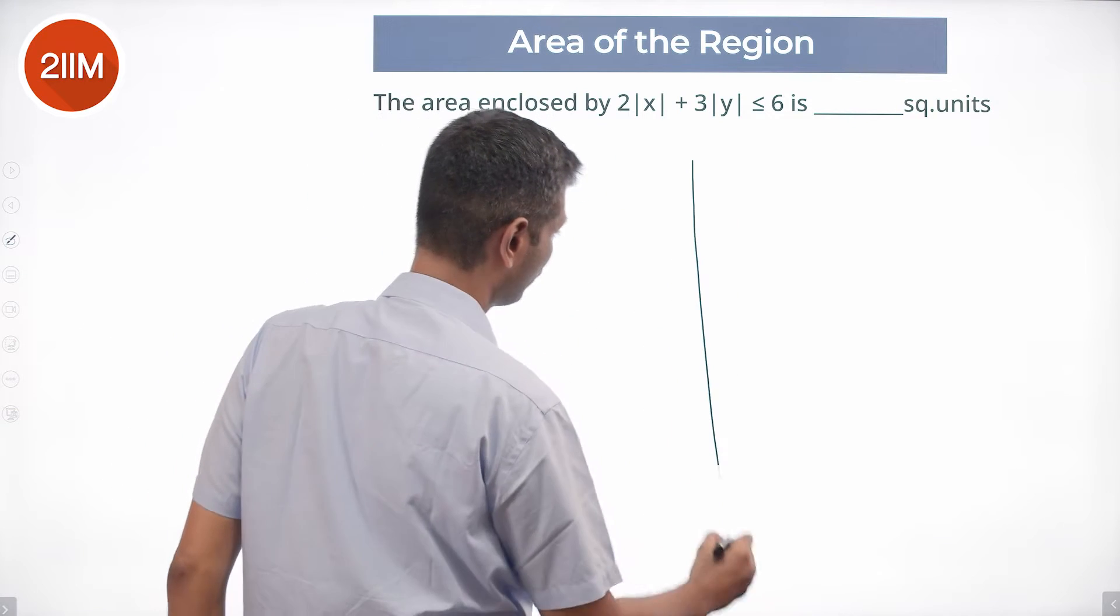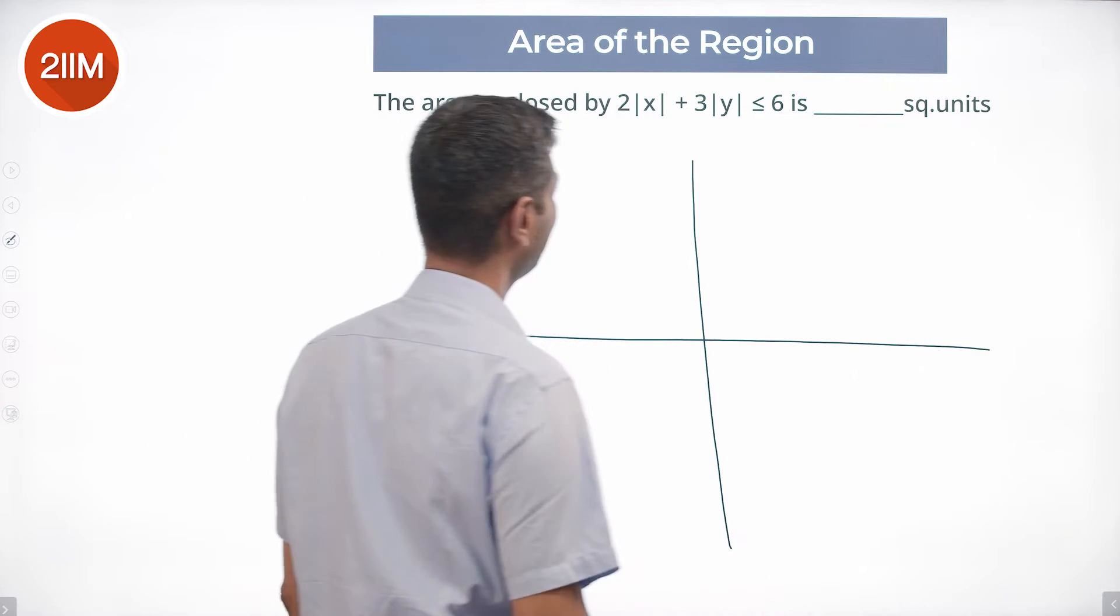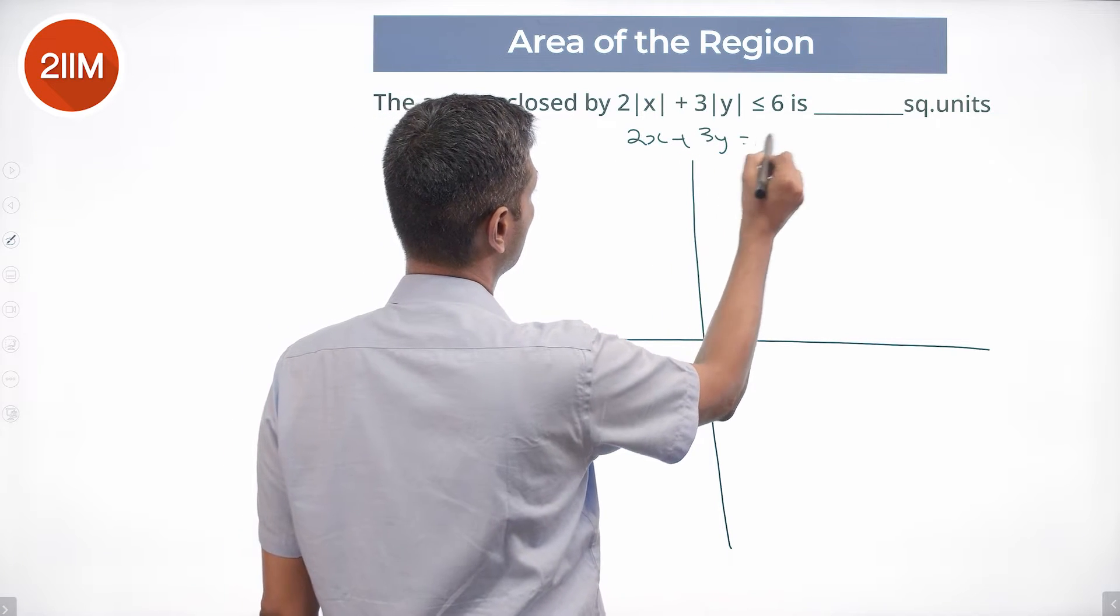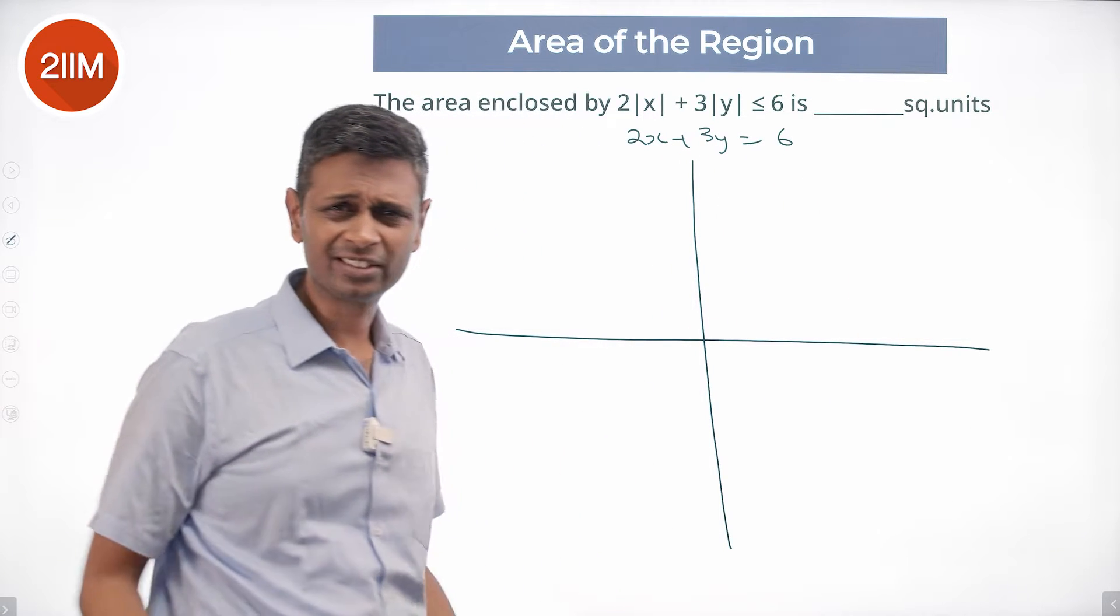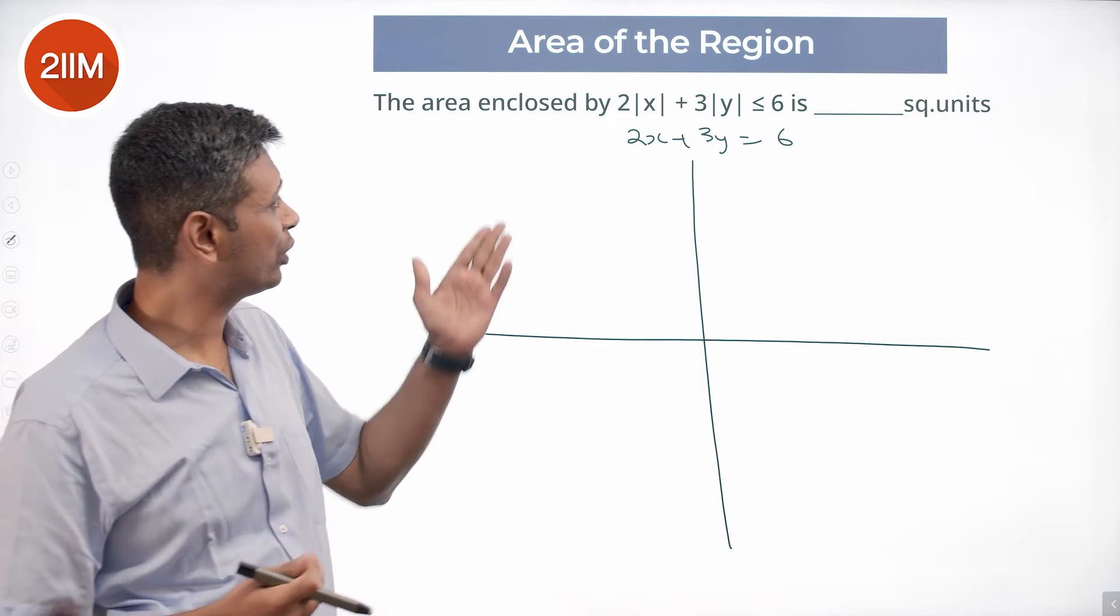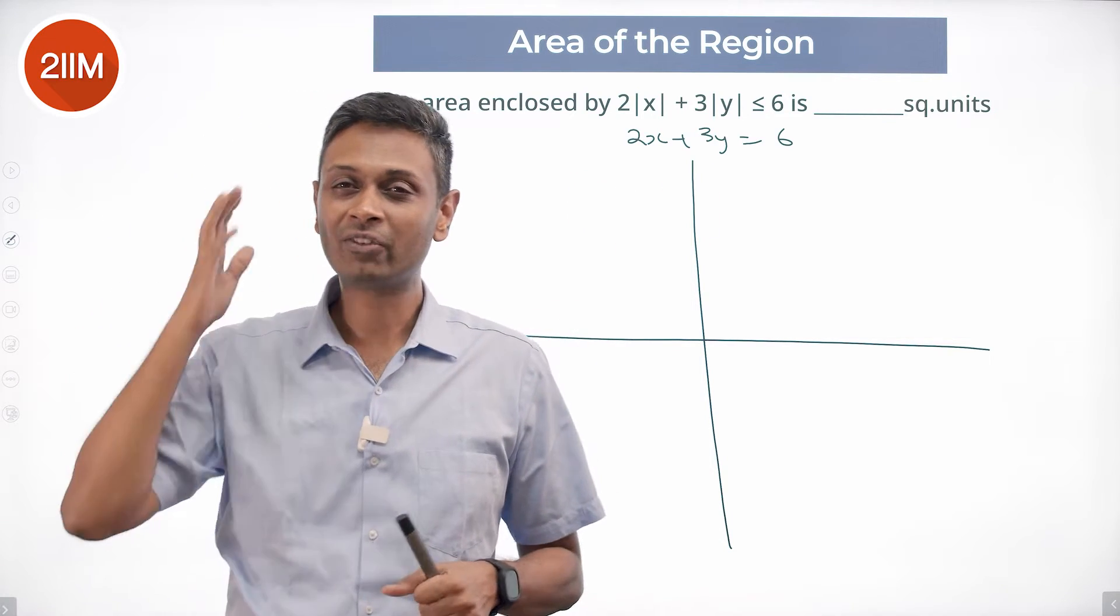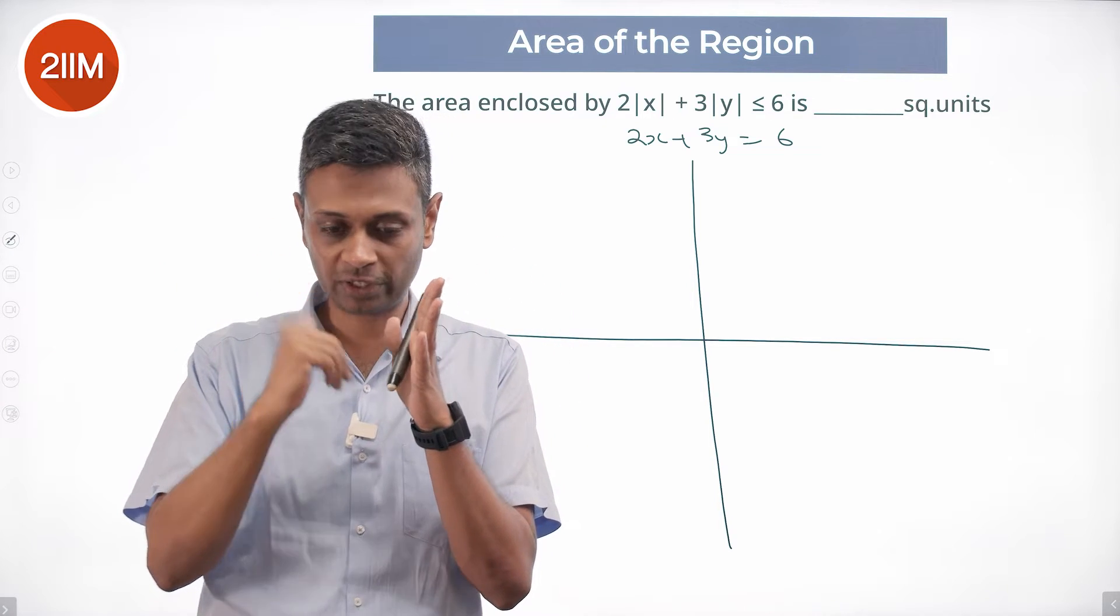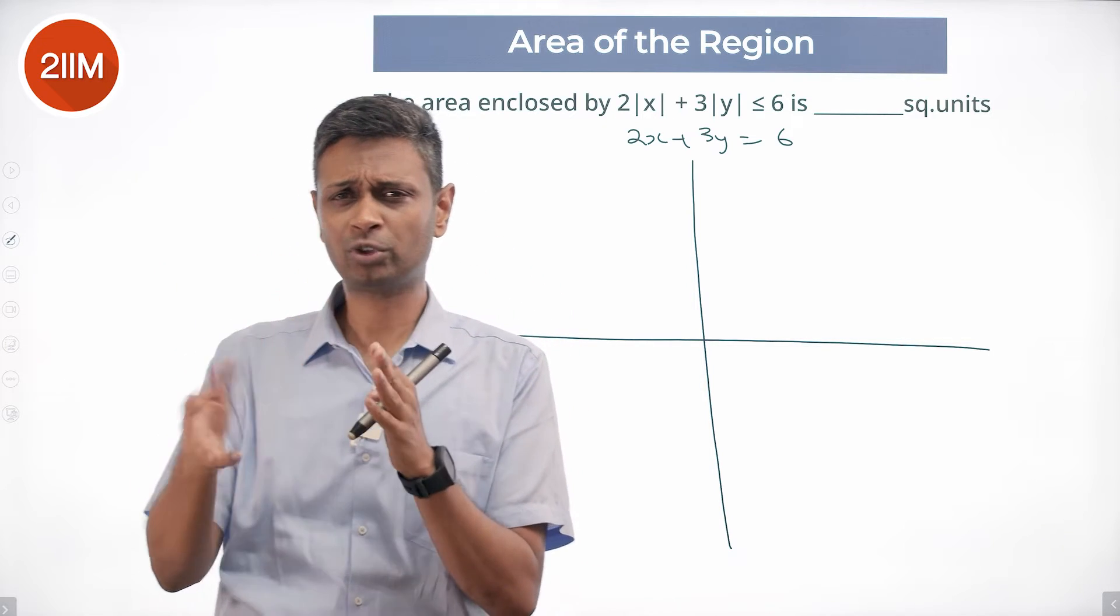I draw x axis, y axis, then I think about 2x plus 3y equals 6. I want to think of it as 2x plus 3y equals 6 when x is positive, y is positive. When x is positive, x equals mod x and y is positive, y equals mod x.